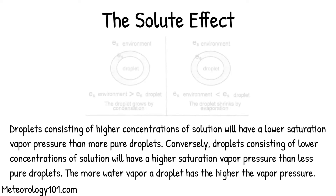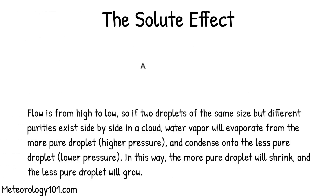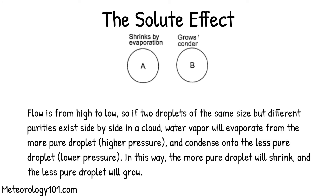Droplets consisting of higher concentrations of solution will have a lower saturation vapor pressure than more pure droplets. Conversely, droplets consisting of lower concentrations of solution will have a higher saturation vapor pressure than less pure droplets. Vapor pressure flow is from high to low, so if two droplets of the same size but different purities exist side by side in a cloud, water vapor will evaporate from the more pure droplet and condense onto the less pure droplet. This will cause the more pure droplet to shrink and the less pure droplet to grow.